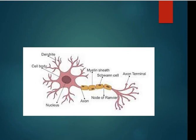The axon is the other main part of the neuron. The axon is the part that carries messages away from the cell body. The axon is covered by a myelin sheath — it is a little bit thicker — which provides protection and insulation to the axon from damage.